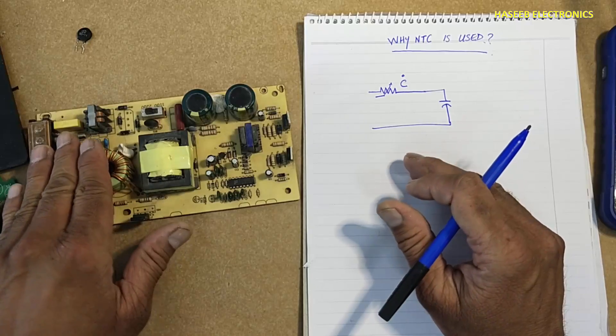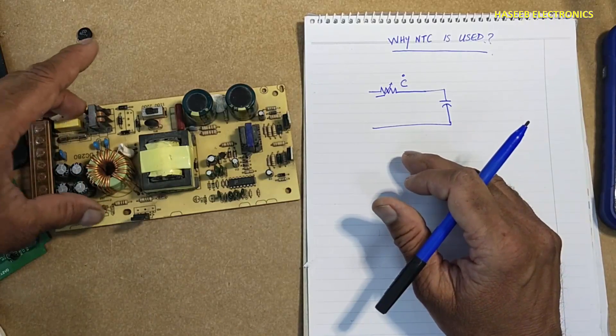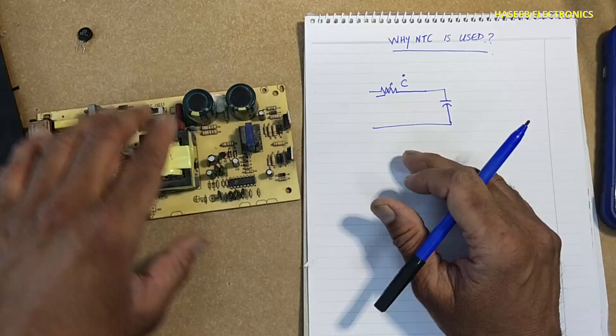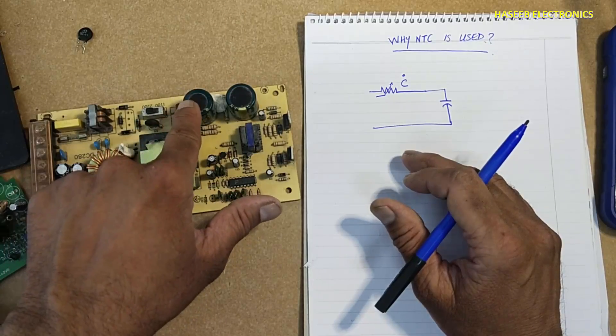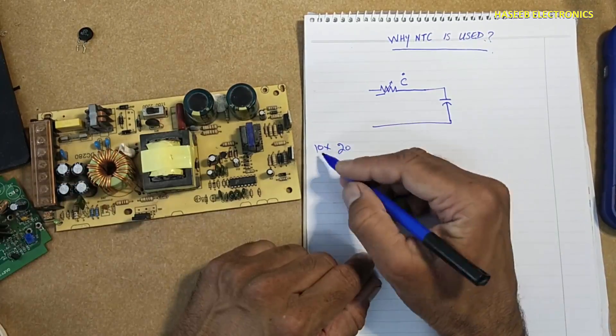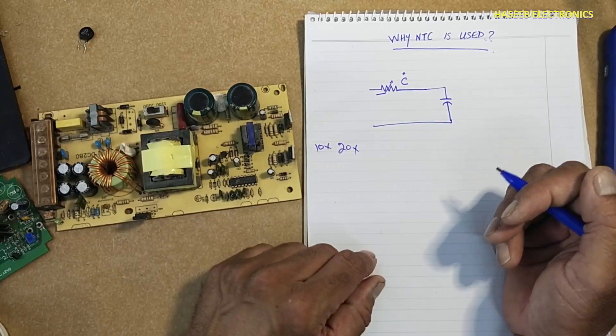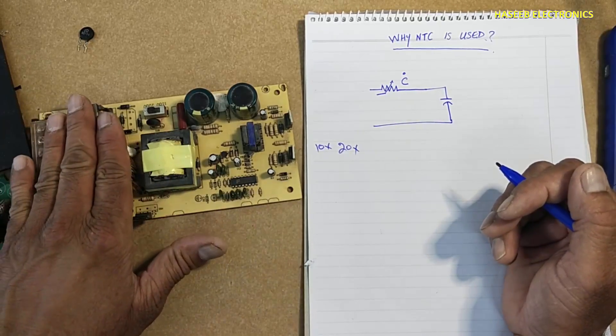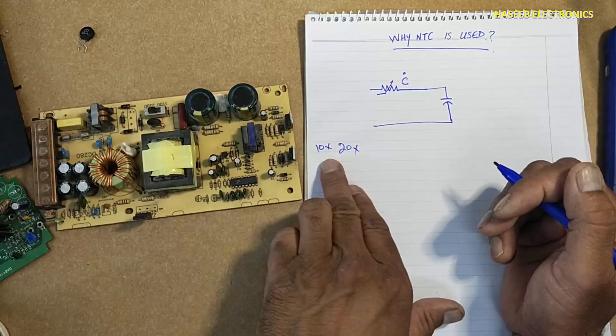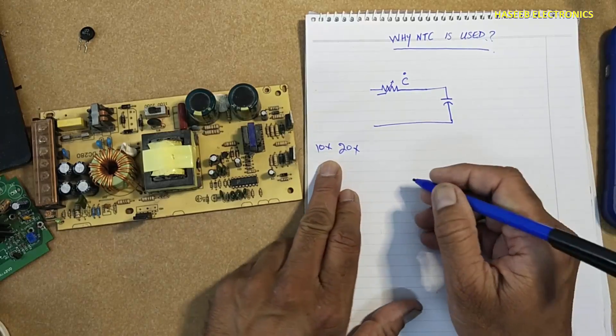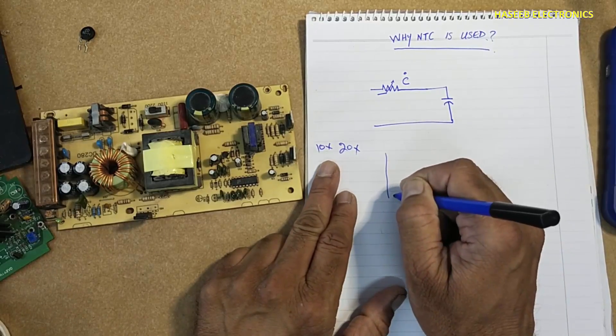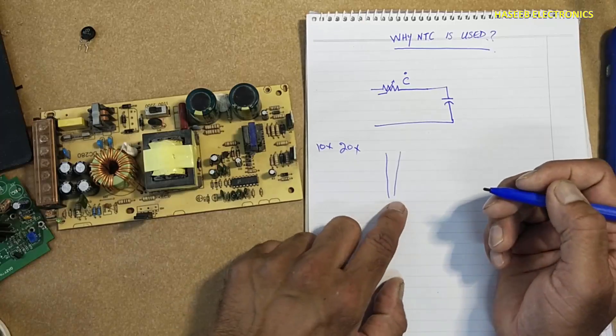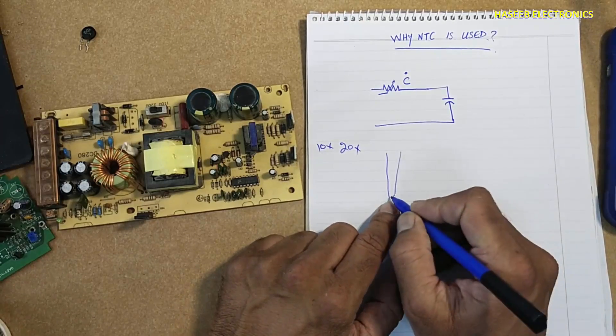Current, for example the routine current for this power supply is 2 ampere. At that time, its current will increase 10 times to 20 times. We can say normal current 2 ampere, 10 times it will increase up to 20 ampere. Initially, initial charging current when power supply is powered on, then it will back to normal.